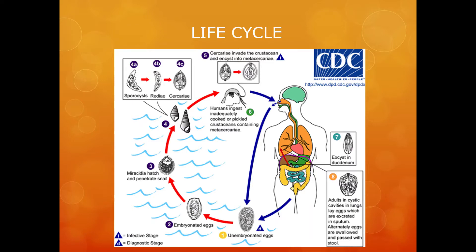Miracidia then go through several developmental stages in the snail — first becoming sporocysts, then rediae, with the latter giving rise to many cercariae. The cercariae then emerge from the snail and invade a second intermediate host, which is a crustacean such as a crab or crayfish, where they encyst to form metacercariae.